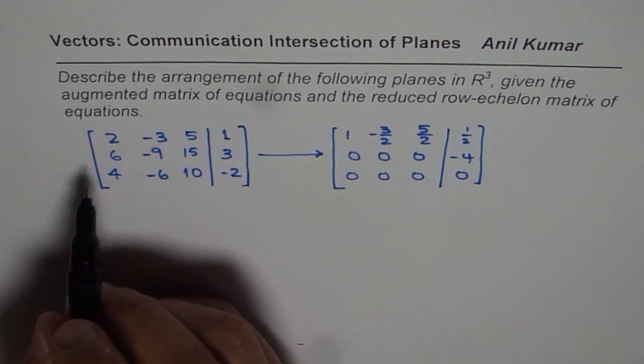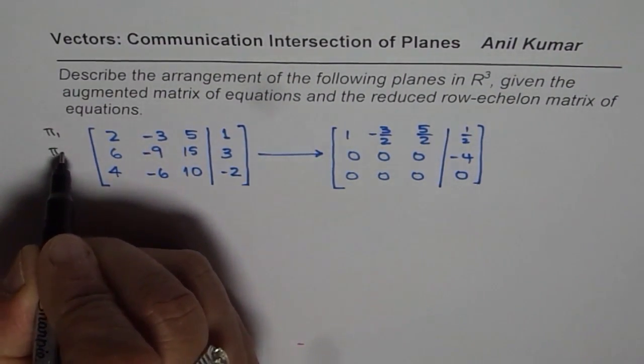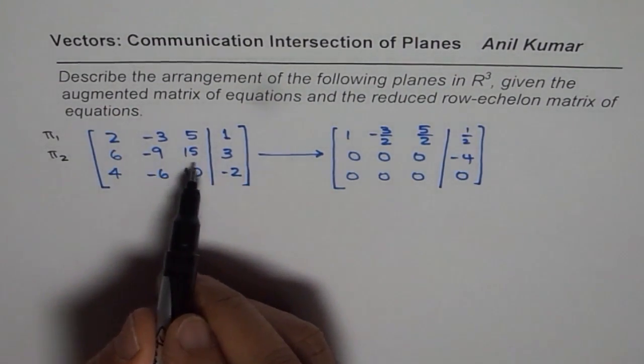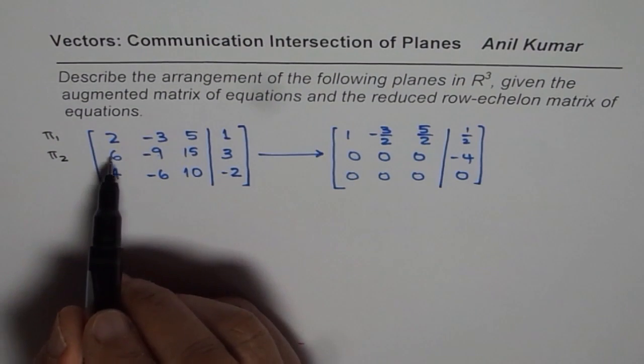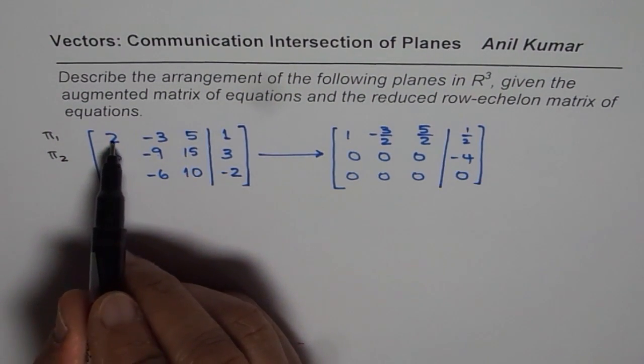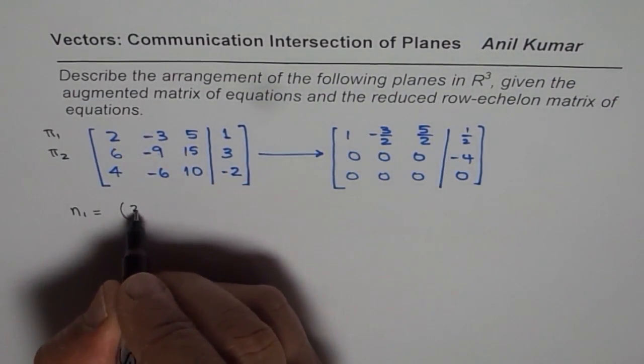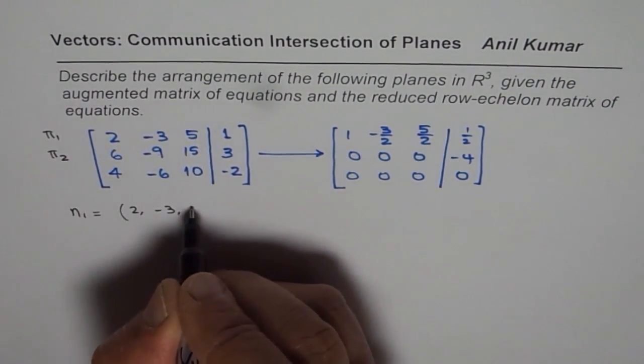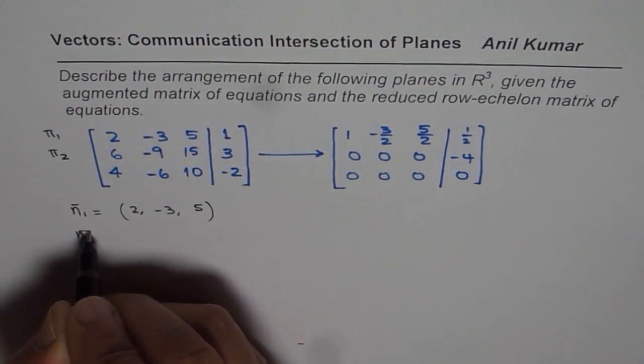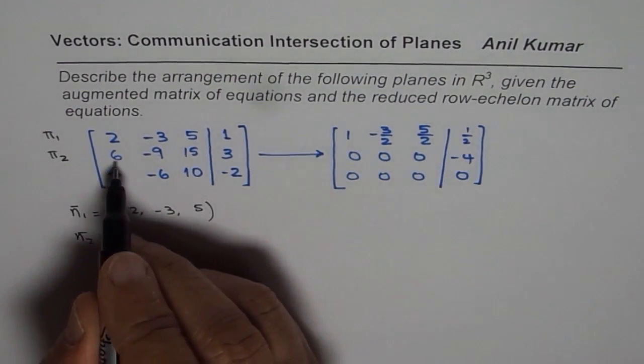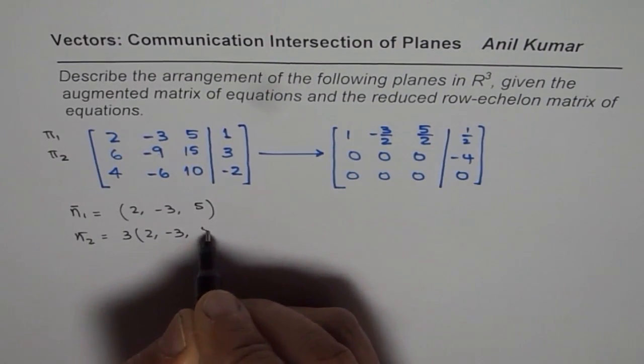Now if you consider these two planes let's say this is plane π1 this is plane π2 in that case we can get all these three values by scalar multiple of 3. So that means the normal n1 is equal to in this case 2 minus 3 5 that is the normal n1 and n2 is actually 3 times 2 minus 3 5.